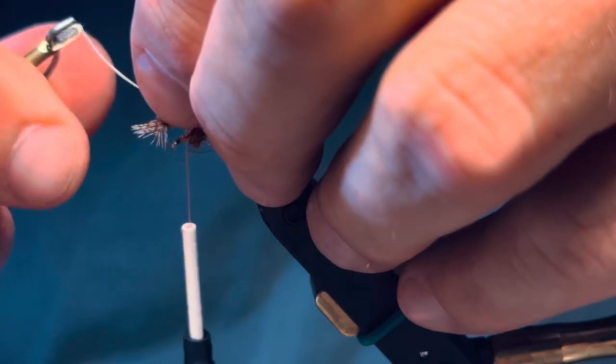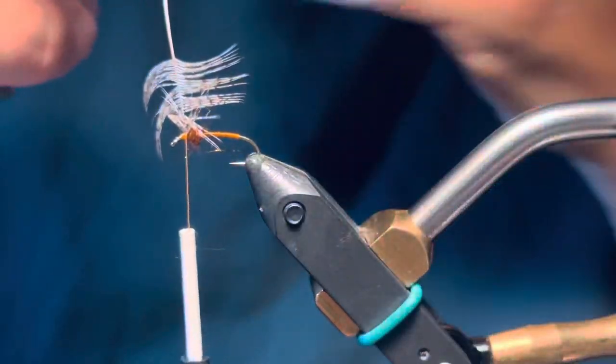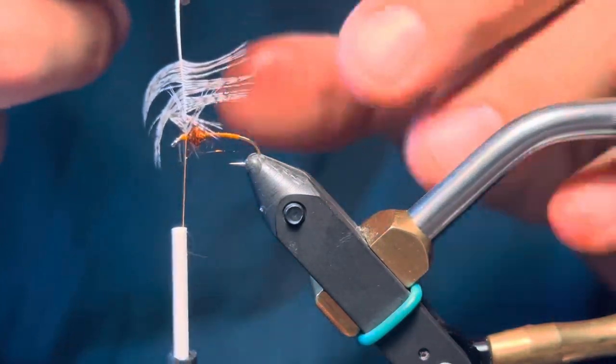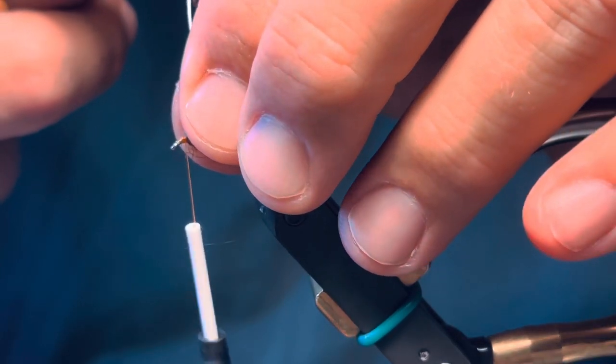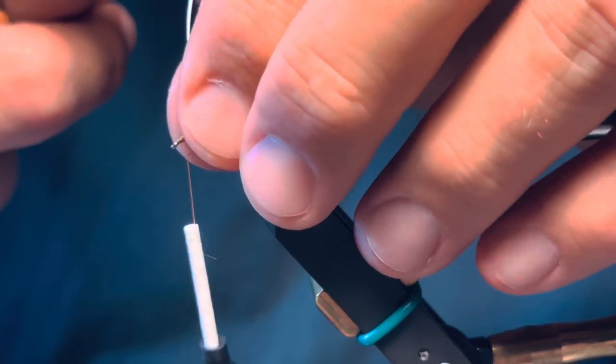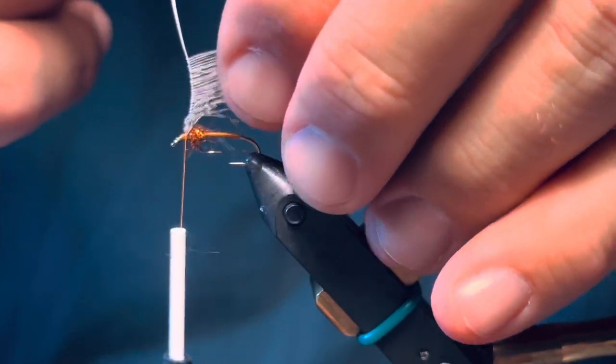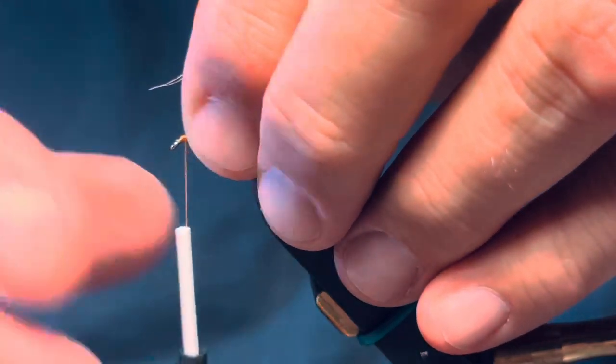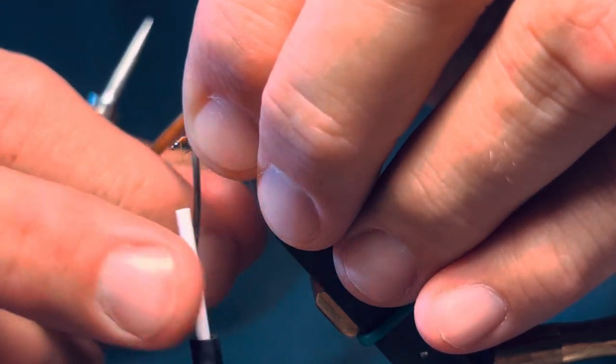Grab the butt with your hackle pliers and stand it up. Shiny side going that way, dull side going that way. Wet your fingers and sweep them back. Shiny side towards the dull side. Give it a little pinch and a little wiggle, and they'll just kind of start to come back. This is one of the easiest flies to tie. Let's go ahead and move our thread forward.